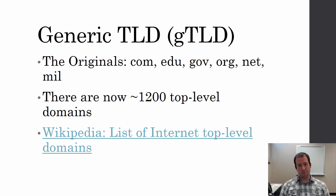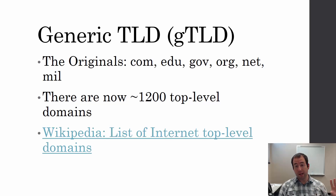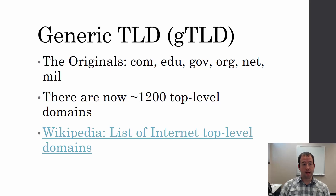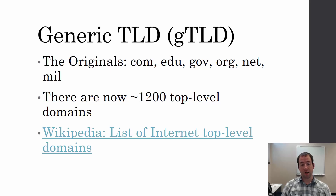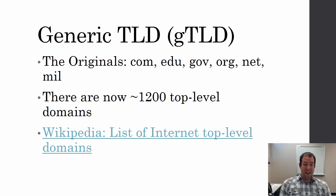Let's talk a little more about top-level domains. Originally we had six top-level domains: com, edu, gov, org, net, and mil — those were the only generic top-level domains. Generic meaning they're not restricted to a certain country, though they are restricted in use. Edu is for educational institutions, mil is for the military, and you weren't able to purchase a .mil address from just anyone.